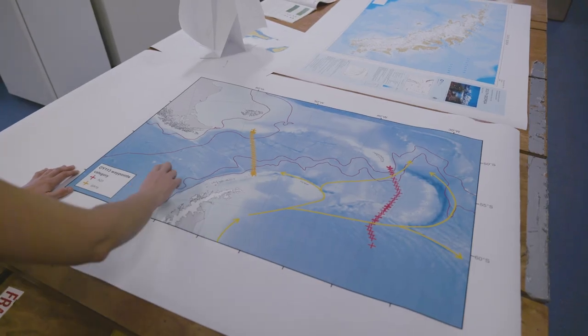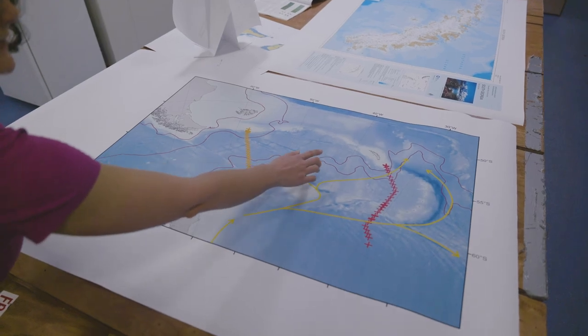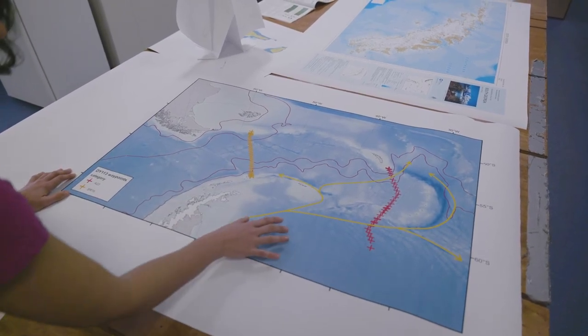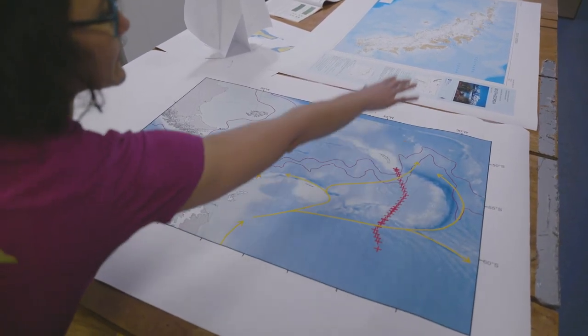In Drake Passage and the Scotia and Weddell Seas, we can observe both the Antarctic Circumpolar Current, the world's largest, and the formation of Antarctic Bottom Water, which fills the abyssal oceans across the globe.